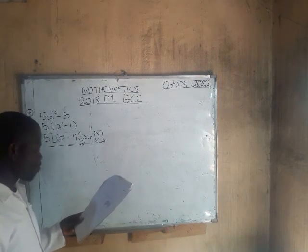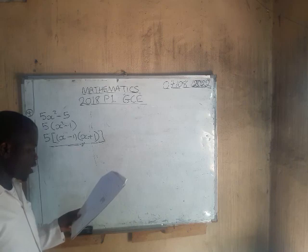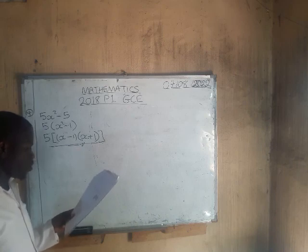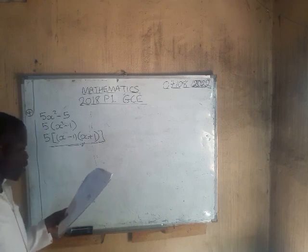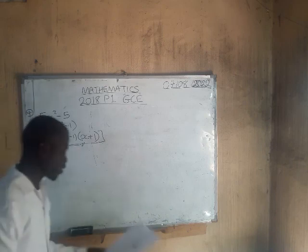Question 5: use set notation to describe the shaded region in the Venn diagram.